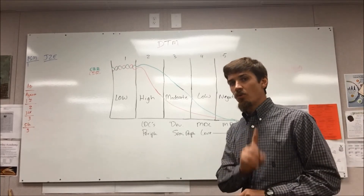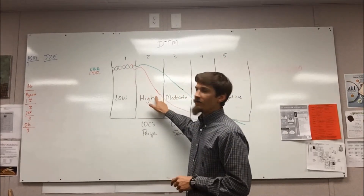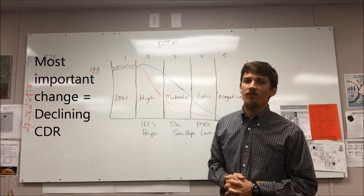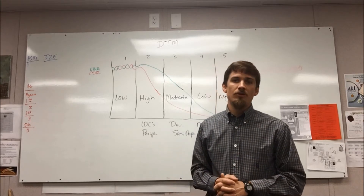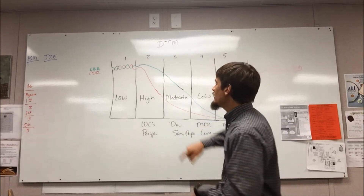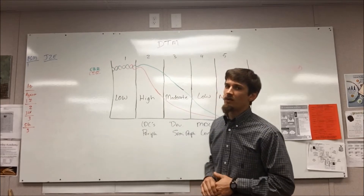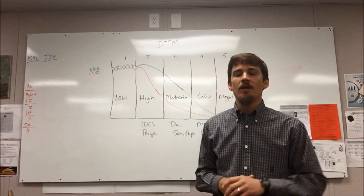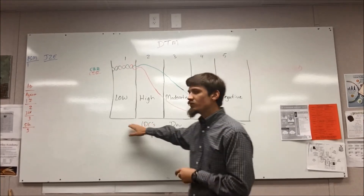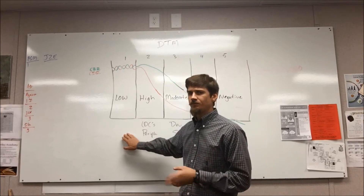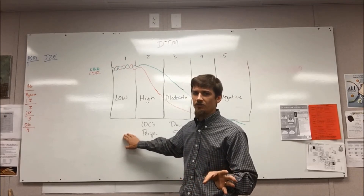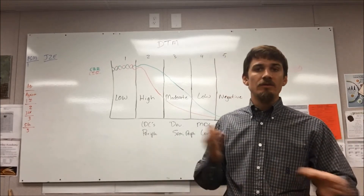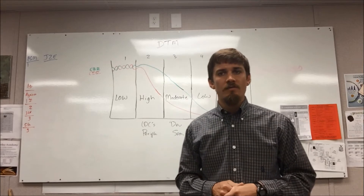Stage two is characterized by a high growth rate. The most important change in stage two is that death rates are coming down very rapidly, while birth rates haven't changed much. Any time you have a large gap between birth rates and death rates, you get high population growth because people are surviving later into their lives. Most people agree that there are no countries still in stage one — most countries have shifted into at least stage two of the demographic transition model.